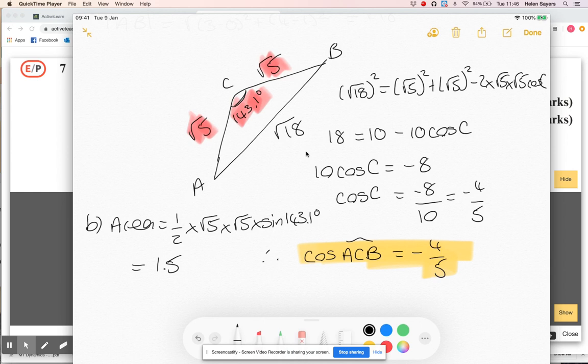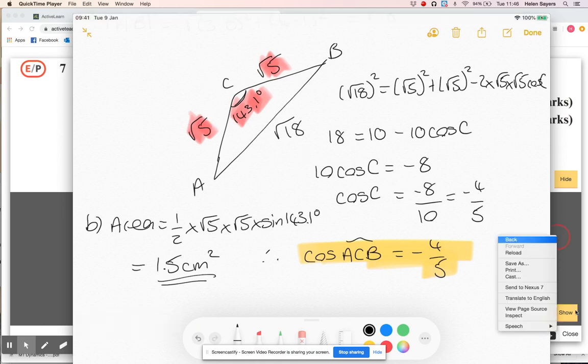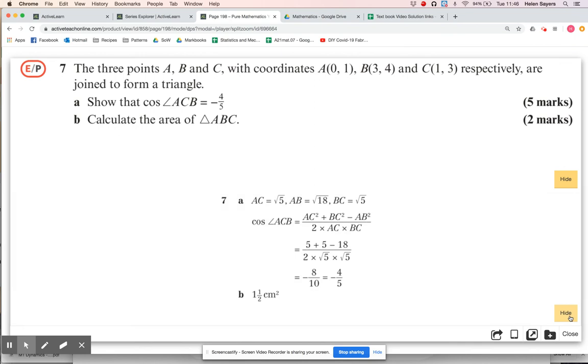So if you rounded the 143.1, obviously you may not have got that exact answer. I'll just check that is the right answer, yeah, one and a half. And yeah, so just, maybe it's using cosine root five.